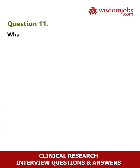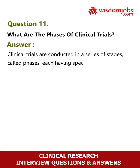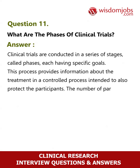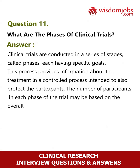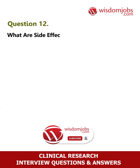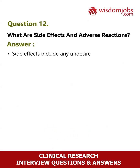Question 11: What are the phases of clinical trials? Answer: Clinical trials are conducted in a series of stages called phases, each having specific goals. This process provides information about the treatment in a controlled process intended to protect participants. The number of participants in each phase may be based on the overall incidence of the condition being studied.